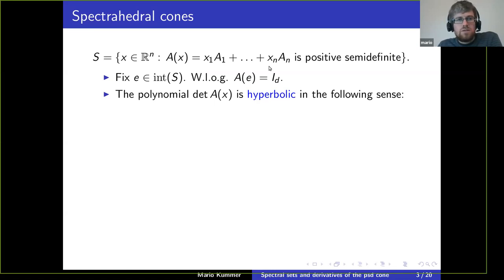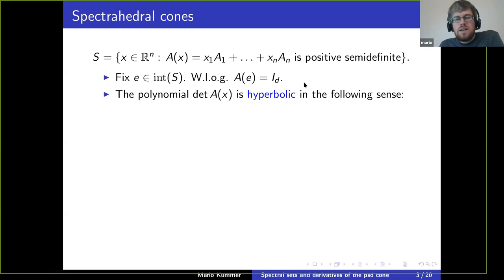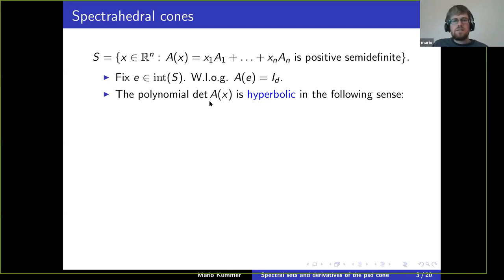Otherwise we can just pass to some strict linear subspace. Then we take some point in the interior of S. After maybe conjugating this matrix polynomial from the left and right with invertible matrices S and S-transpose, we can assume that at this point the matrix polynomial is the identity matrix. Now let's look at the following polynomial: take the determinant of this.